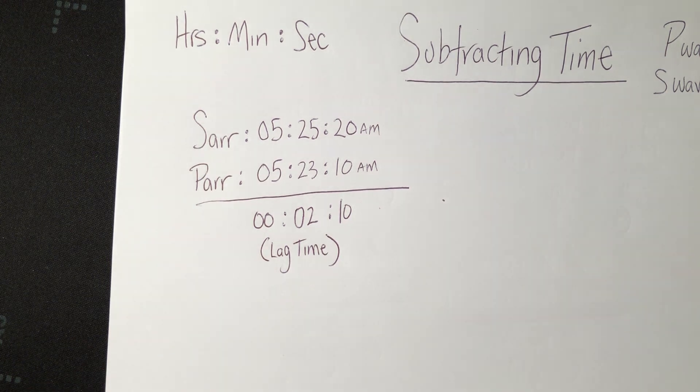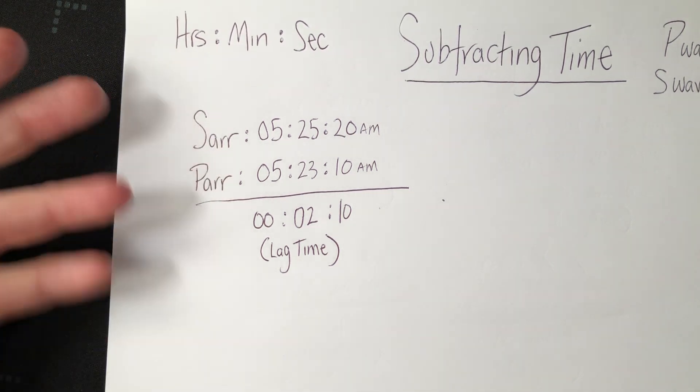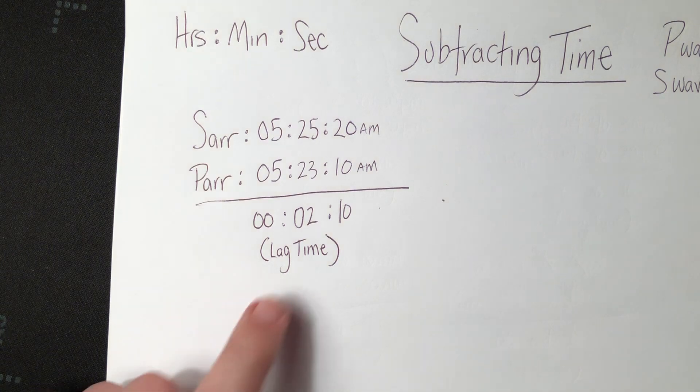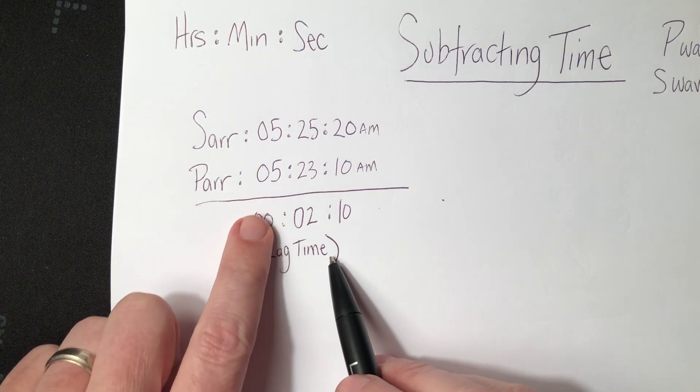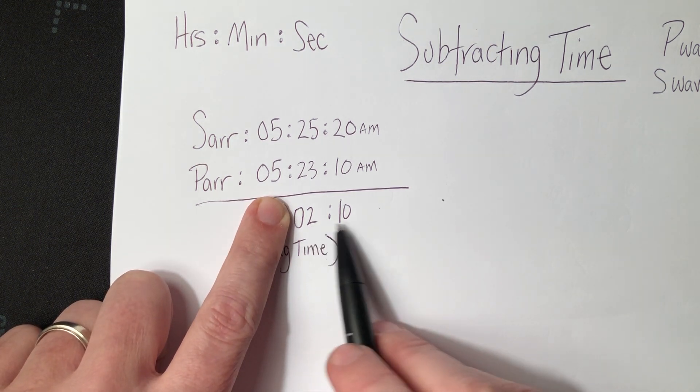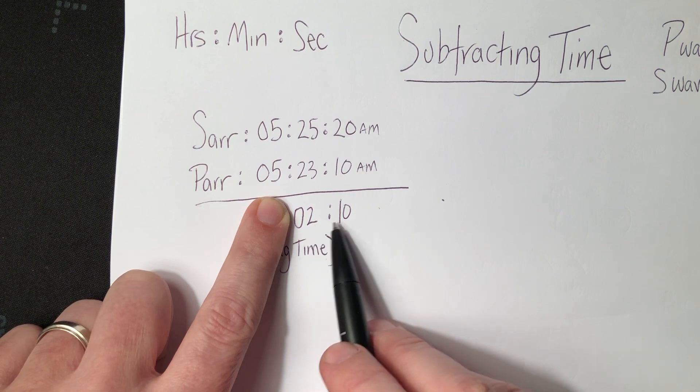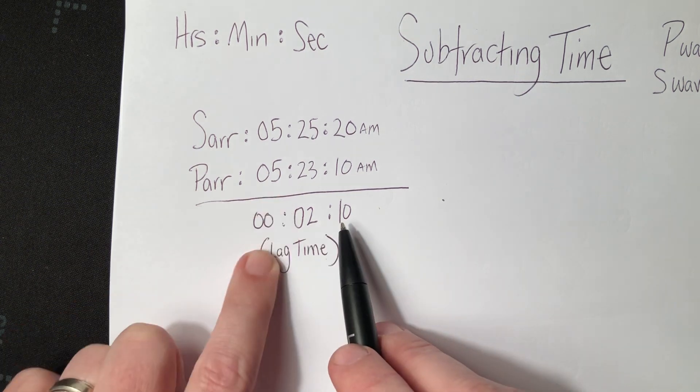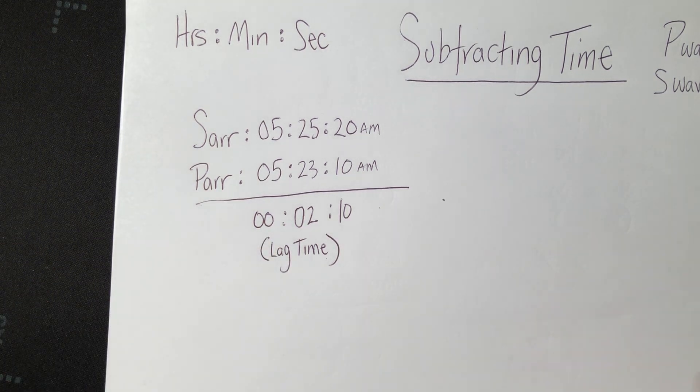This is what we call your lag time. If you show up at school at 8 o'clock, your best friend shows up at 8:10, there's a 10-minute lag between the two of you. So think about your P wave and S wave in terms of you and a friend showing up at school or showing up at the movies. That's a 2-minute and 10-second lag time. Now, the reason why I put the 0 in front of the 2 minutes is because if you just put down 2:10, I don't know if that's 2 hours and 10 minutes or 2 minutes and 10 seconds. If I put the 0 in the placeholder for the hour, I know that's 2 minutes and 10 seconds.